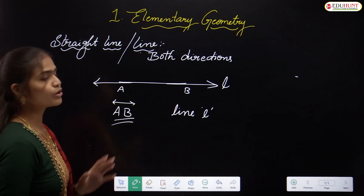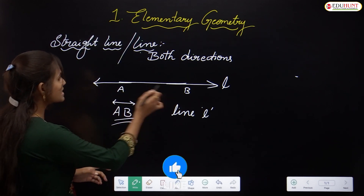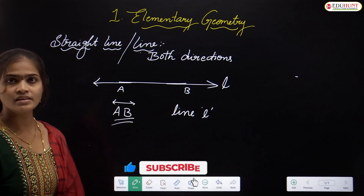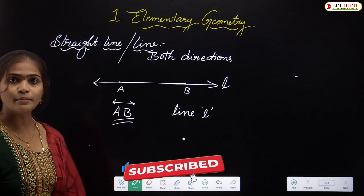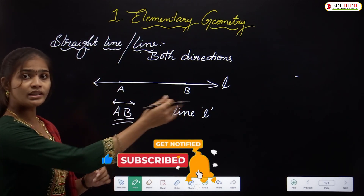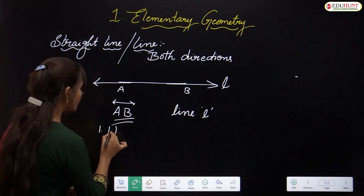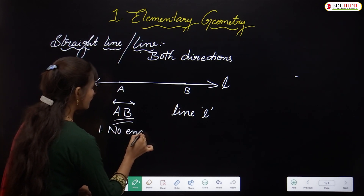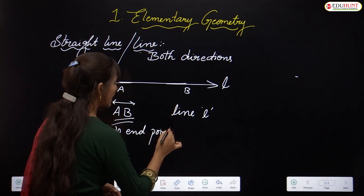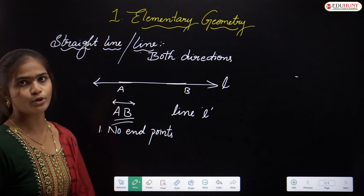Now, what are the properties of a straight line? The first property is that a straight line does not have any end points. Why? Because a straight line is extended endlessly in both directions. That's why the first property is: no end points.